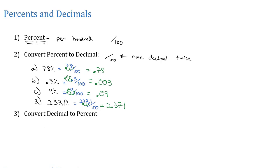We can also go the other way. We can convert a decimal into a percent. And to do that, we're going to multiply by 100%. And since we're multiplying, that's also going to move the decimal twice. But because we're multiplying, it should get bigger, so we're going to move it the other direction.